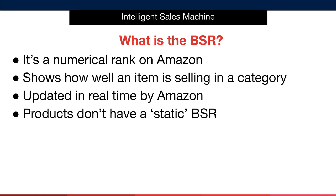As a result, products don't have a static BSR — they're constantly moving. Generally speaking, the higher the BSR, the more volatile the movement can be. For example, if an item has a high BSR of 12,000 in Home and Kitchen, it could quickly move to, say, 15,000.